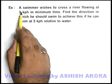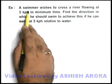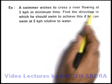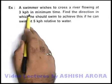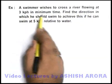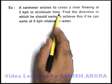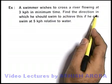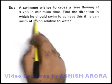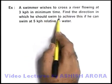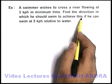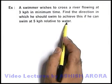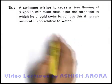In this example, it is given that a swimmer wishes to cross a river flowing at 3 kilometers per hour in minimum time. We are required to find the direction in which he should swim to achieve this, if he can swim at 5 kph relative to water.